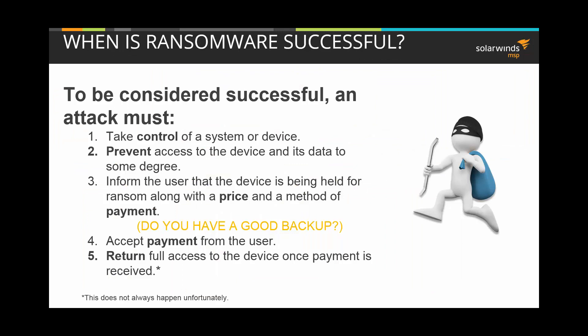You don't have to be a victim of a successful ransomware attack to have data loss — even a failed attempt after step one can wreak havoc with your data. A successful attack involves a variant taking control of your system, preventing access to that device and its data. At this point you're impacted and may need AV cleaning software or backup to perform a restore. A successful attempt will also inform you that you are being held ransom and present a method of payment. Having a good backup in place is the difference between recovering your environment, paying the ransom, or having a significant data loss event.